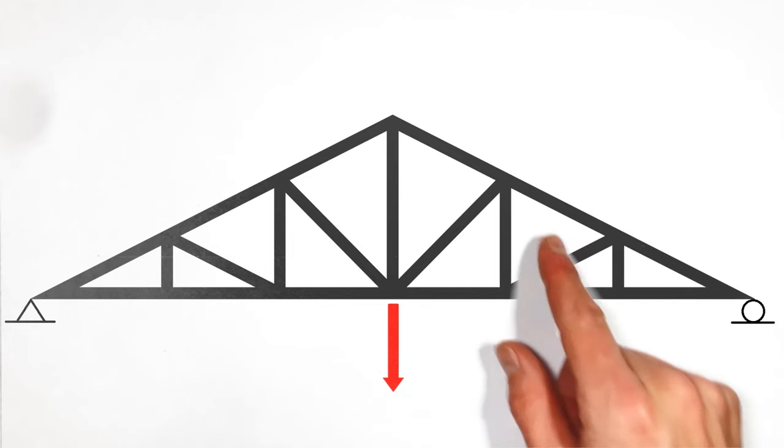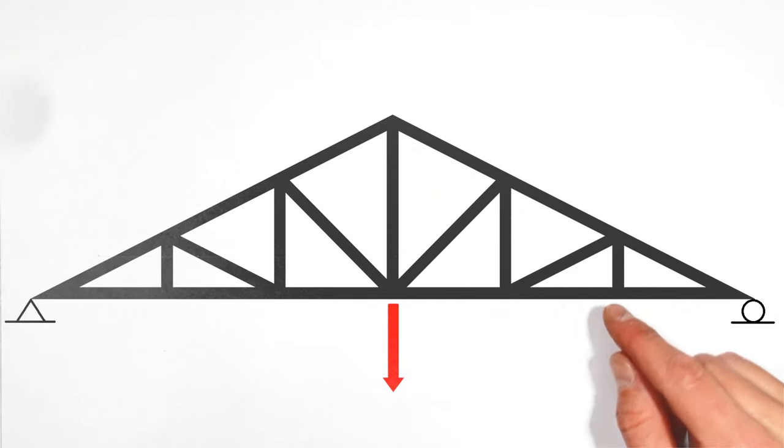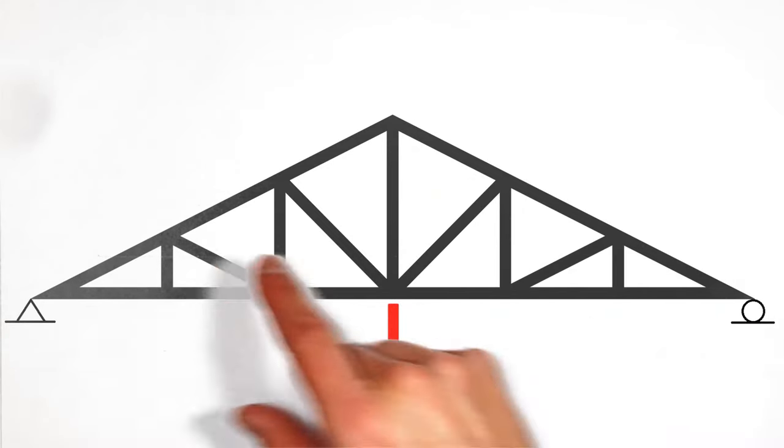And here's the key. When analyzing trusses using the method of joints, we can ignore zero-force members and act like they're not there.